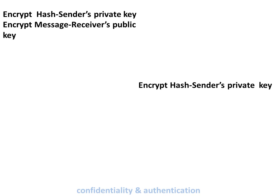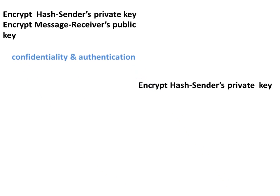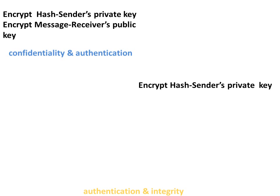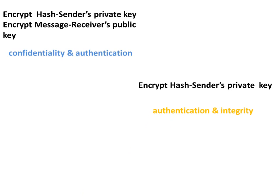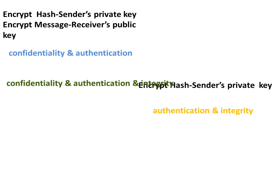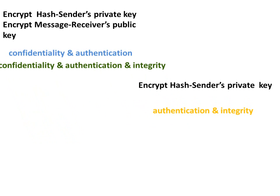One more exercise. If the objective is confidentiality and authentication, the sender's private key will ensure authentication and the receiver's public key will ensure confidentiality. If the objective is authentication and integrity only — no confidentiality — then we do not need the receiver's public key; only the sender's private key is needed, encrypting the hash. If the objective is confidentiality, authentication, and integrity, we need to create a hash, use the sender's private key for that hash, and then encrypt the full message using the receiver's public key.